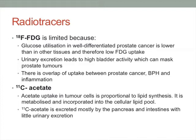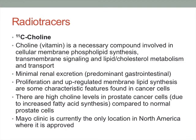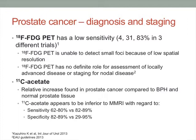Acetate uptake in tumour cells is proportional to lipid synthesis and is mostly excreted by the pancreas and intestines with little urinary excretion. More commonly used now is choline — a vitamin and necessary compound involved in cellular membrane phospholipid synthesis, transmembrane signalling, and lipid and cholesterol metabolism. It has minimal urinary excretion. Proliferation and upregulated membrane lipid synthesis are characteristic features of cancer cells, and high choline levels in prostate cancer cells are thought to be due to increased fatty acid synthesis compared to normal cells. Currently, the Mayo Clinic is the only clinic in North America where it is approved, but this is likely to change.